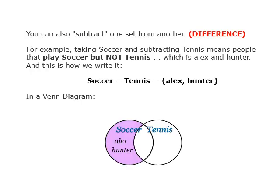You can also subtract one set from another, which is the difference. For example, Soccer − Tennis gives people who play soccer but not tennis, which is {Alex, Hunter}. The complement of a set includes all friends who are not in that set — any friend not playing soccer or tennis would be the complement of the union of those sets. That concludes the concept of sets.